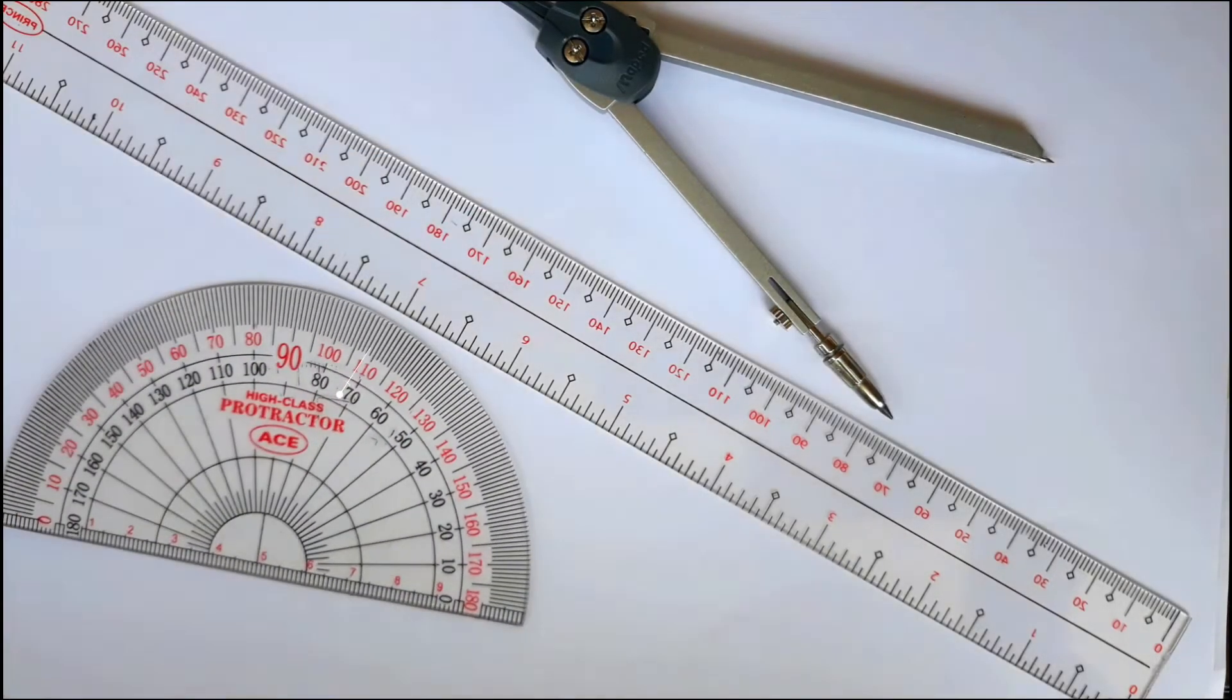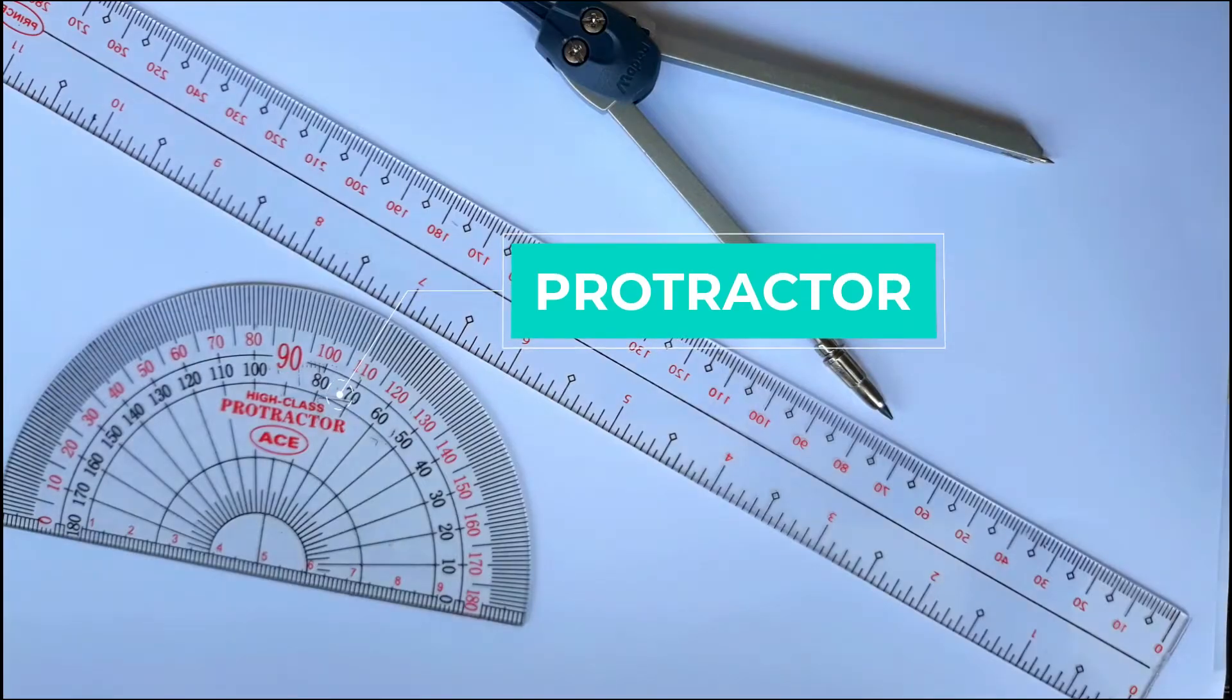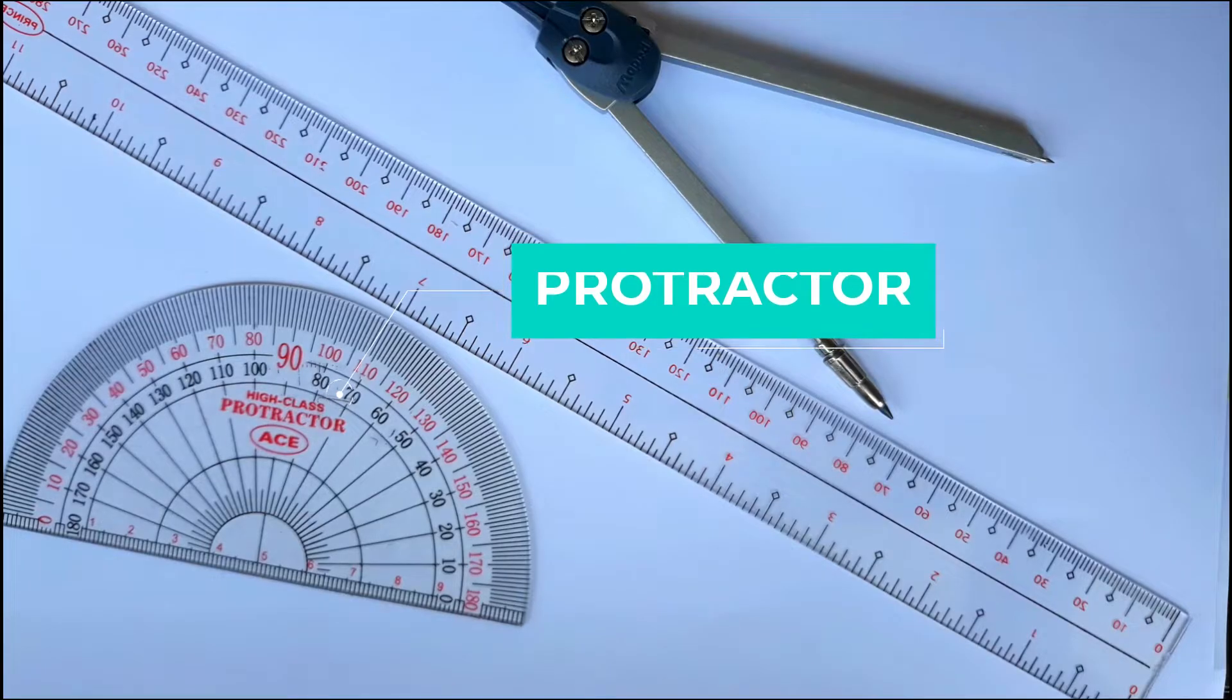And lastly, we have the protractor. It is used to measure angle. It has the degree marks on the semicircular arc which ranges from 0 to 180 degrees. The midpoint is at 90 degrees. The angle between two consecutive marks is 10 degrees. The mark is written on curved edge at an interval of 10 degrees.